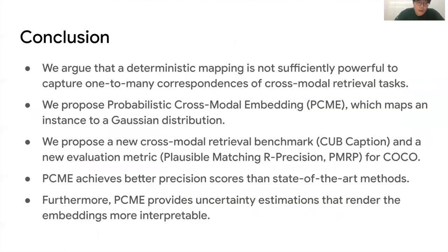In conclusion, we argue that deterministic embedding is not sufficiently powerful to capture one-to-many correspondence of cross-modal retrieval tasks. We propose probabilistic cross-modal embedding, or PINGMI, which maps an instance to a Gaussian distribution. We propose a new cross-modal retrieval benchmark, CUV captions, and a new evaluation metric, plausible matching ART precision, PMRP, for COCO captions. PINGMI achieves a better precision score than state-of-the-art methods, provides uncertainty estimation well, and renders the embedding more interpretable. Thanks for your attention.